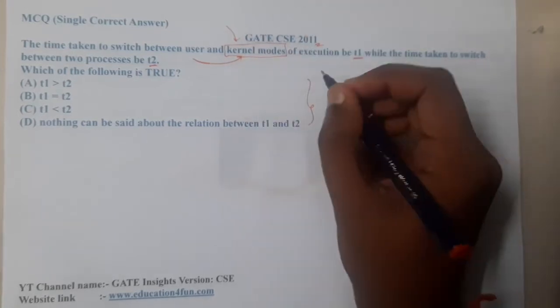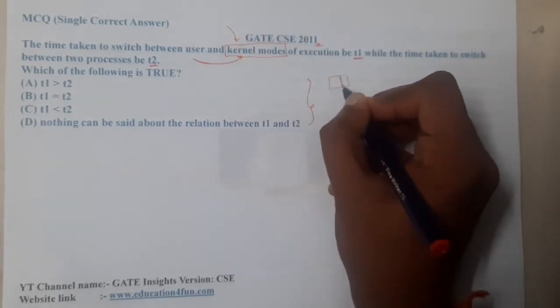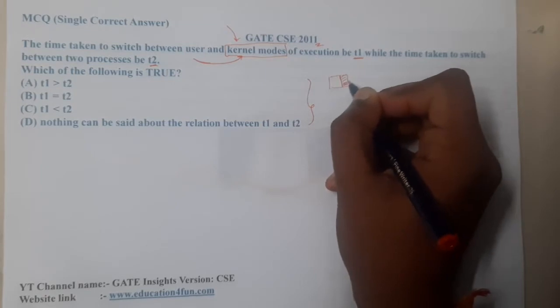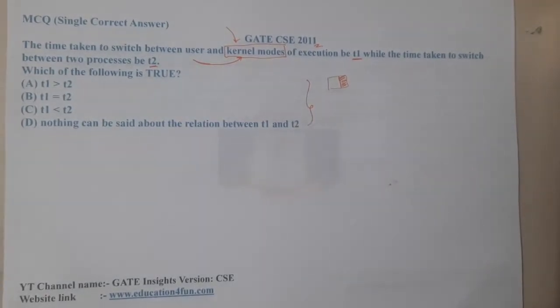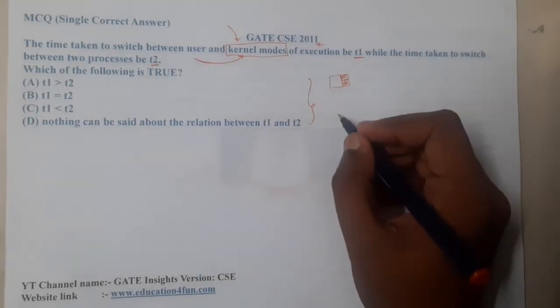All the system calls used by the kernel are predefined. That is the reason why when you are swapping from user level to kernel level, this execution t1 will take less time compared to switching between processes.